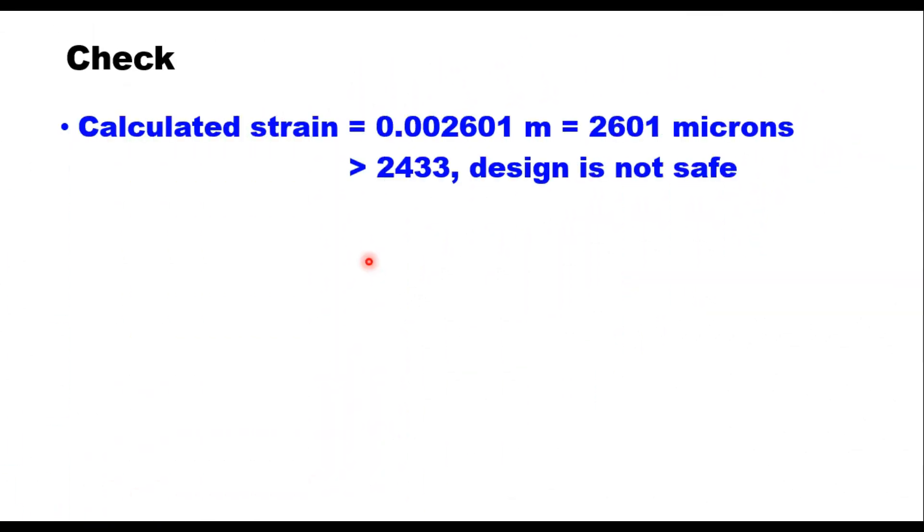Okay, now you see the file here. So the strain here is, you get epsilon z that is 2601, 2601 into 10 to the power minus 2, so 0.002601. So the calculated strain from IITPAVE for a subbase thickness of 160 millimeter is 0.002601, that is 2601 microns, which is larger than the limiting strain 2433, and therefore design is not safe.